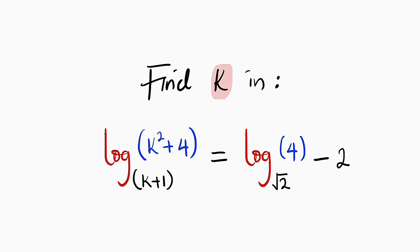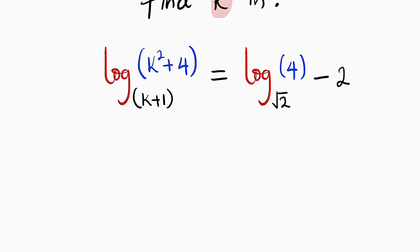First of all, let us simplify the right hand side and keep the left hand side constant. We have log of k squared plus 4 with the base of k plus 1, and to the right hand side, I want to express 4 and root 2 to a base 2. This can be written as log of 2 power 2 because 2 power 2 is the same thing as 4, and root 2 can be written as 2 raised to the power of 1 divided by 2. All of this minus 2.